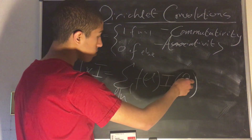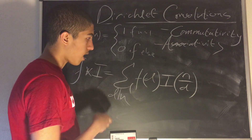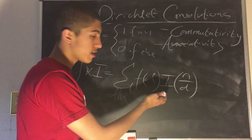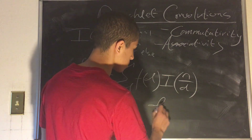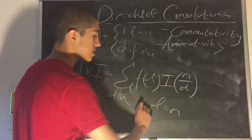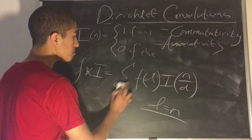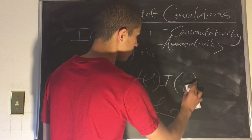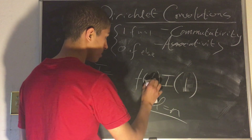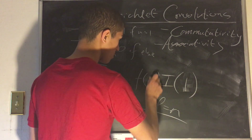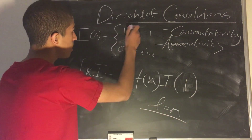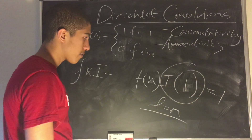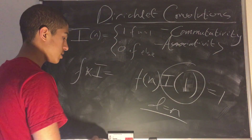i of n over d equals 1 only when d equals n, and 0 everywhere else. So this product is nonzero only in the case that d equals n. In that case, n over d equals 1, and we get f of n times i of 1. Since i of 1 equals 1, that's just 1 times f of n. We have successfully proved that f convoluted with i equals f.